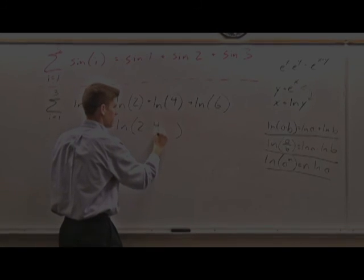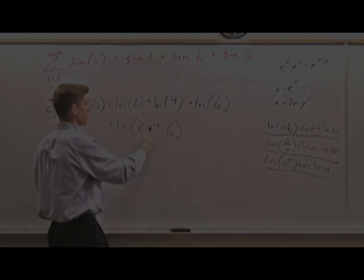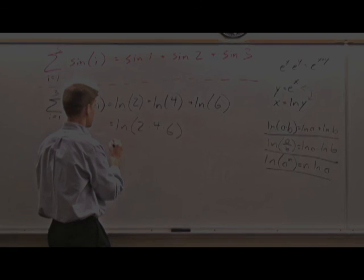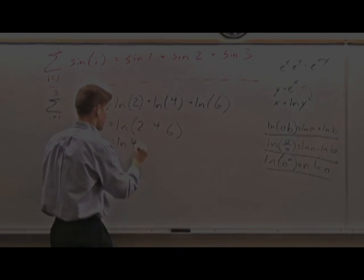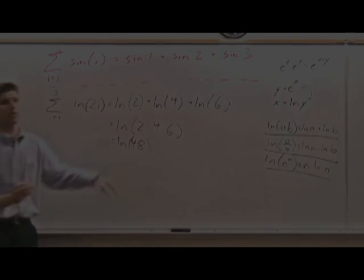Multiply. Multiply. There we go. 2 times 4 is 8. 2 times 6 is 48. Still an irrational number, but you're...